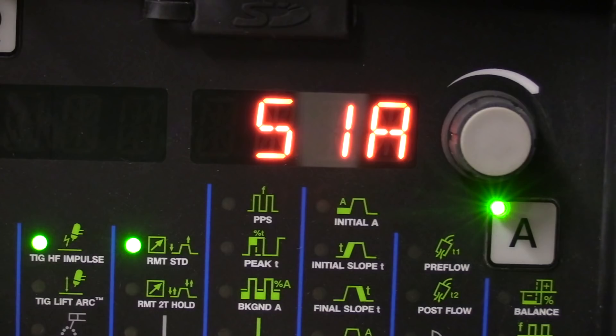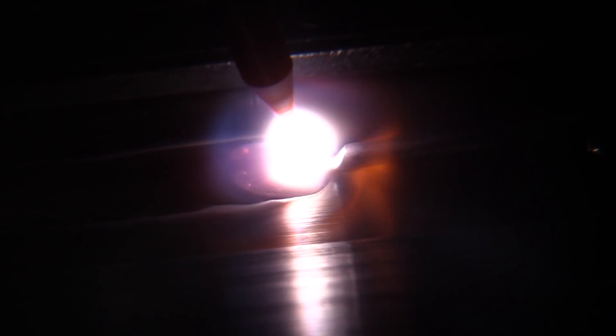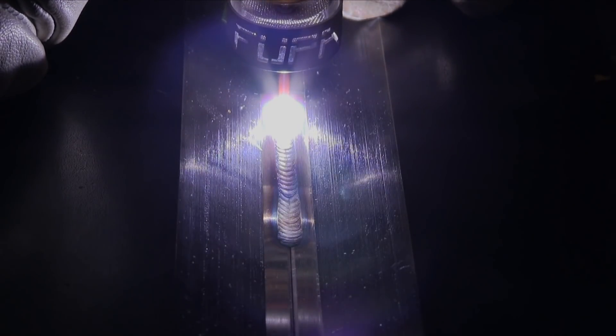51 amps it takes to penetrate this stuff. That was what I settled in at. It would probably take a little bit less than that if it wasn't such a chill block. Anytime you put something in a fixture that's a heat sink or a chill block like this, it's going to take a few more amps to weld than it would be out in its free state. But you have to have something to hold it down and keep it straight. And a fixture like this is very common in the industry.